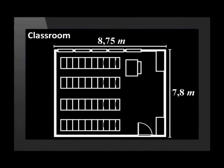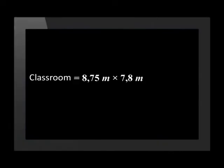This classroom has a length of 8.75 meters and a breadth of 7.8 meters. We want to draw a plan of this classroom on an A4 sheet of paper. Before we do that, we need to convert the measurements of the classroom into millimeters. To convert meters to millimeters, we multiply the measurements by 1,000. The new dimensions are now 8,750 millimeters by 7,800 millimeters.